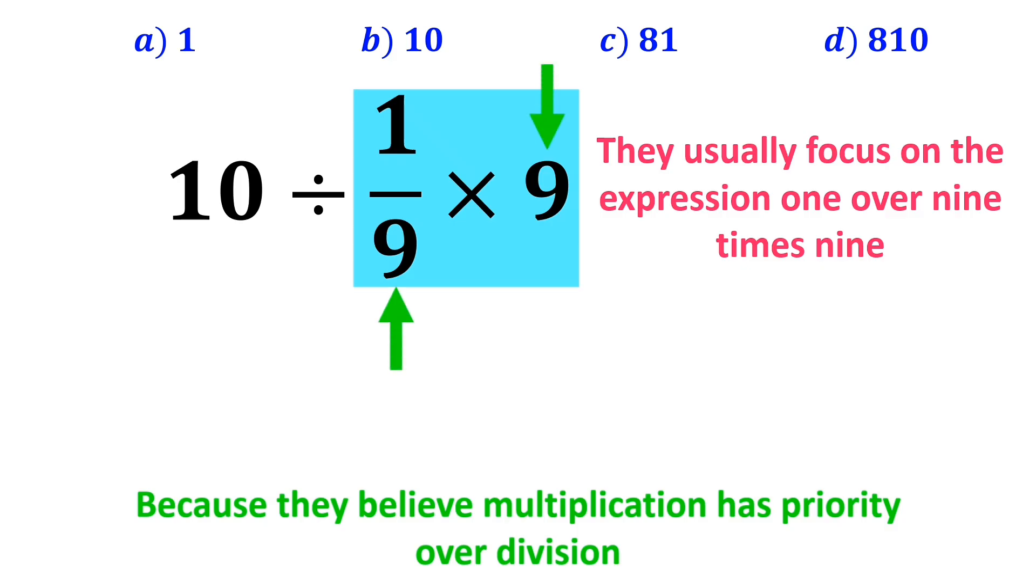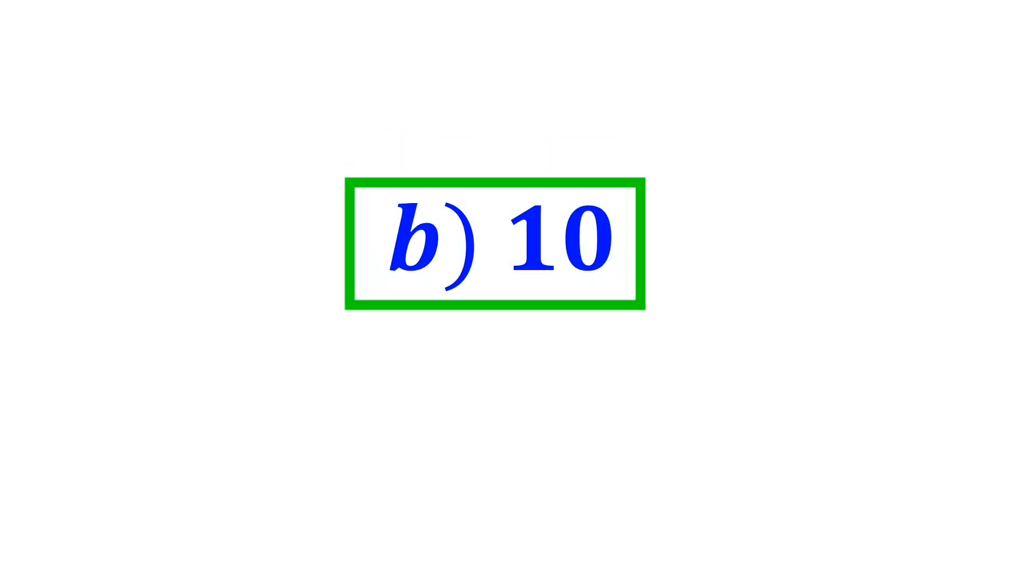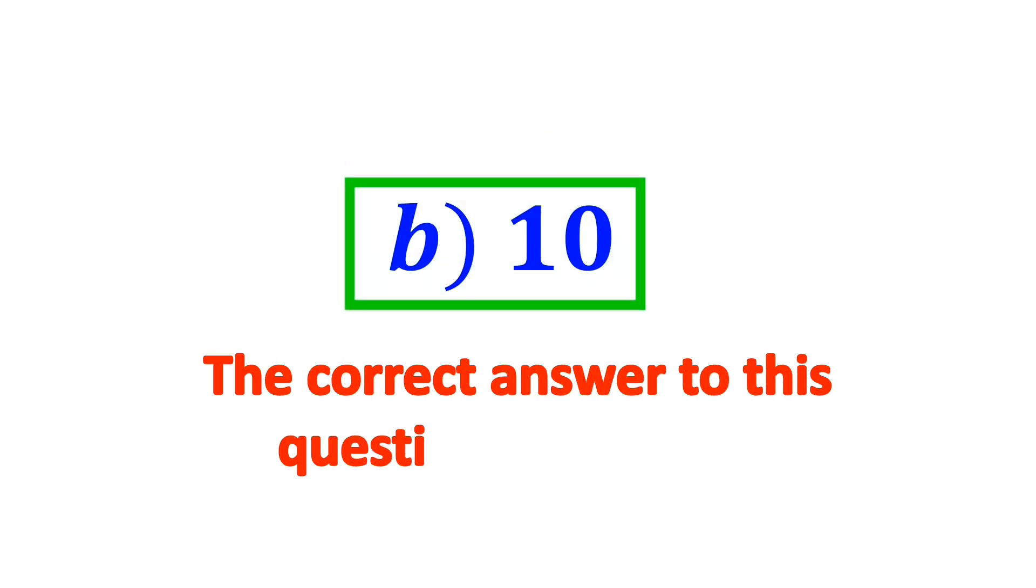As you can see in the image, they very easily cancel out the two 9's and write this expression as 10 divided by 1, which ultimately gives them the answer 10. And without any hesitation, they quickly say that the correct answer to this question is option B.